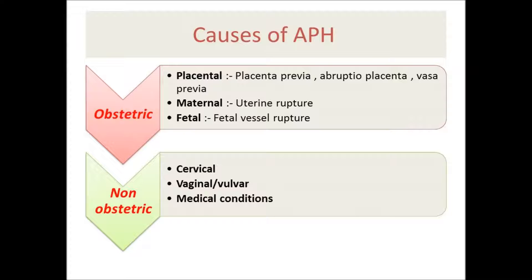For maternal causes, we have uterine rupture, which usually occurs during induction of labor. When the mother has poor contractions we give oxytocin, but an overdose may lead to hyperstimulation of the uterine muscles and rupture of the uterus — especially when the uterus is previously scarred, for example from a previous cesarean section. For fetal causes, we have fetal vessel rupture, specifically when the umbilical vessels are inserted away from the placenta between the amnion and chorion. Here the vessels are unprotected and vulnerable to damage, requiring immediate cesarean delivery.